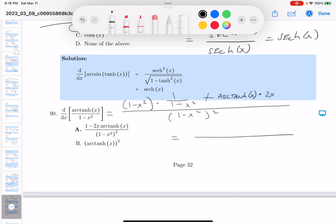And what am I seeing over here? I'm seeing 1 plus 2x arc hyperbolic tangent of x over 1 minus x squared squared. Let's see if that answer is listed.